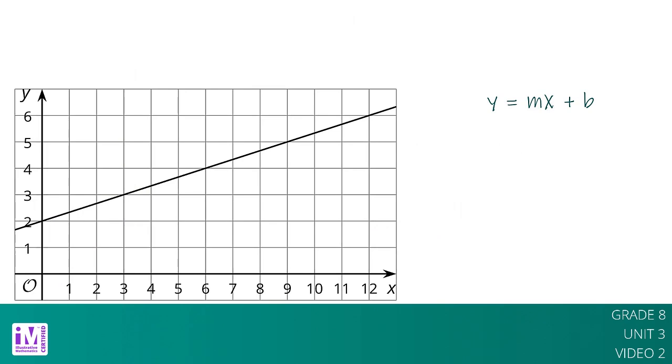Now what if we didn't have a description to use to figure out the slope and the vertical intercept? That's okay, so long as we can find some points on the line. For the line graph here, two of the points on the line are (3, 3) and (9, 5), and we can use these points to draw in a slope triangle.